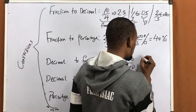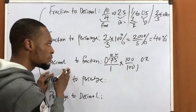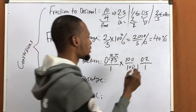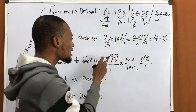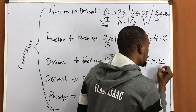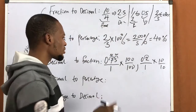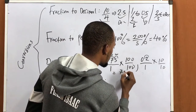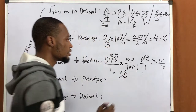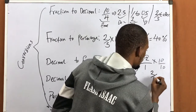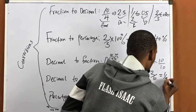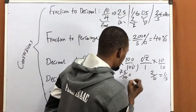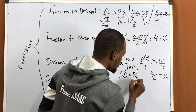Let me explain with a simpler example. If you are given 0.2 decimal to convert to fraction, first divide by 1. Then count backward: it has just 1 digit, so you take it as 10. Multiply the top and bottom by 10 to get 2 over 10, which simplifies to 1 over 5. For 0.75, multiplying top and bottom by 100 gives 75 over 100, which simplifies to 3 over 4.